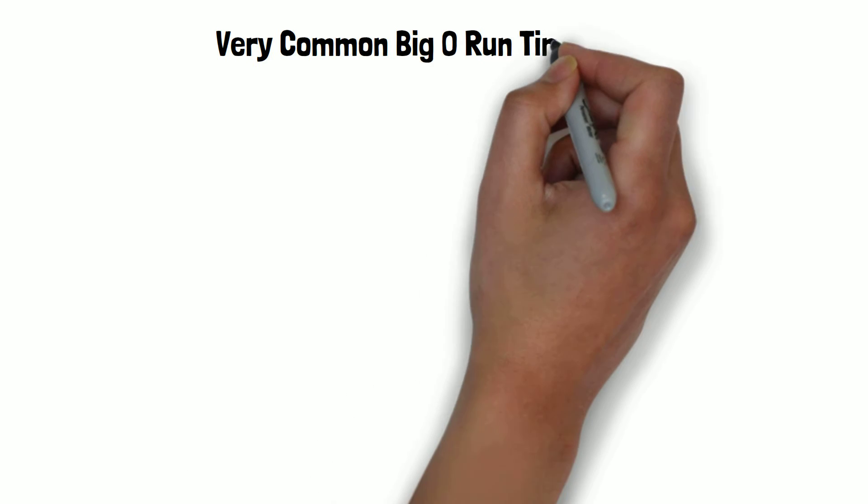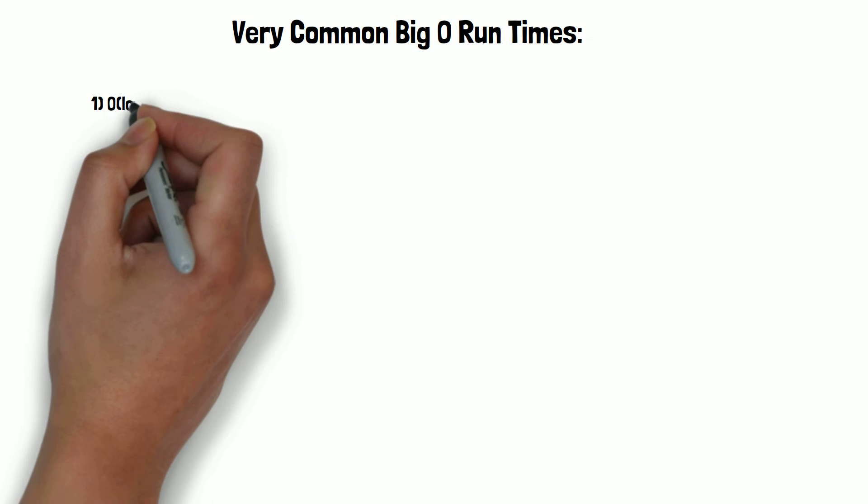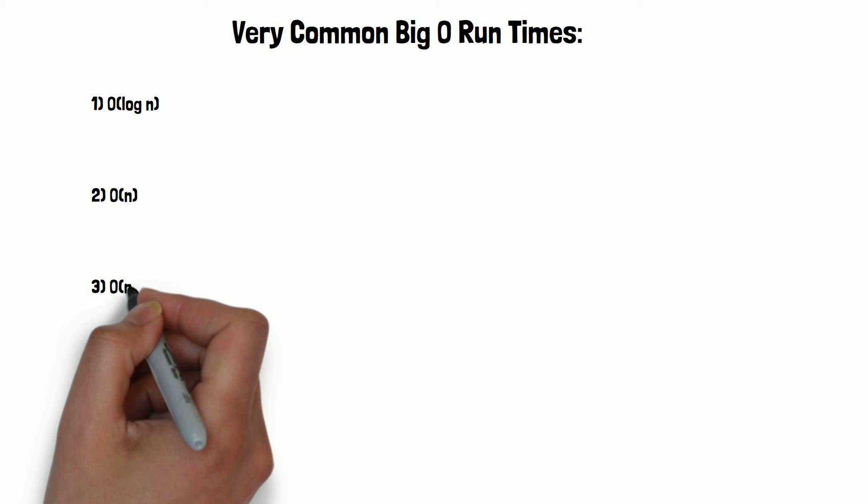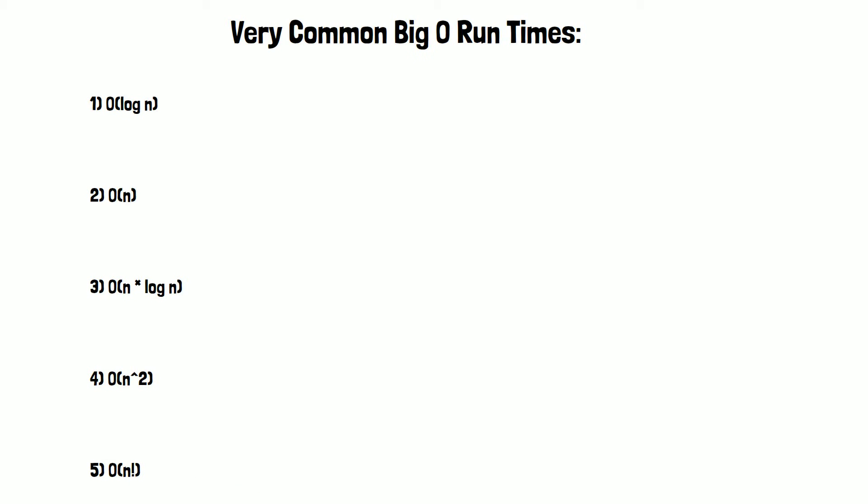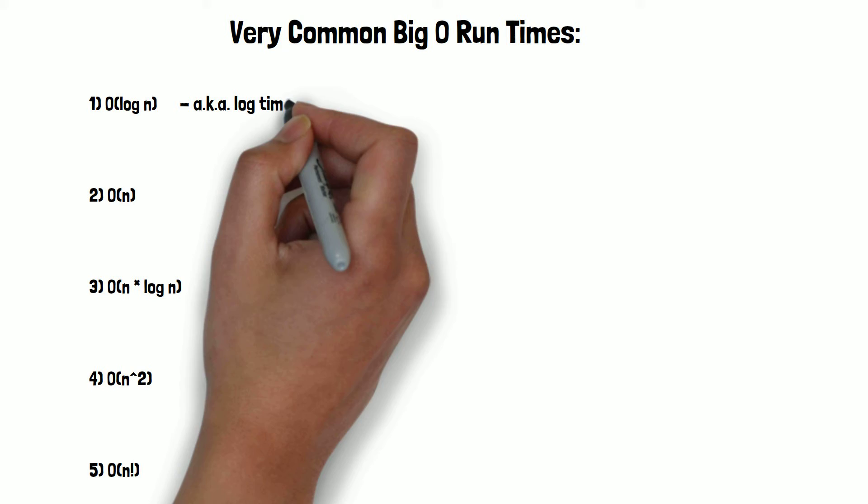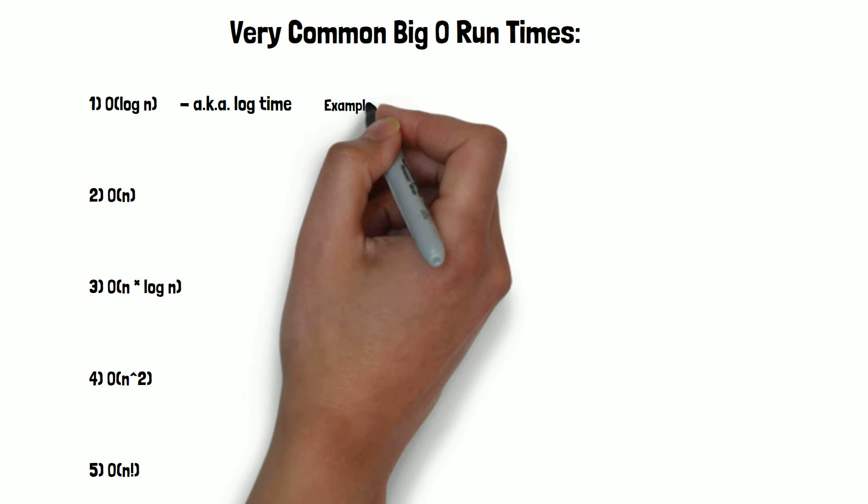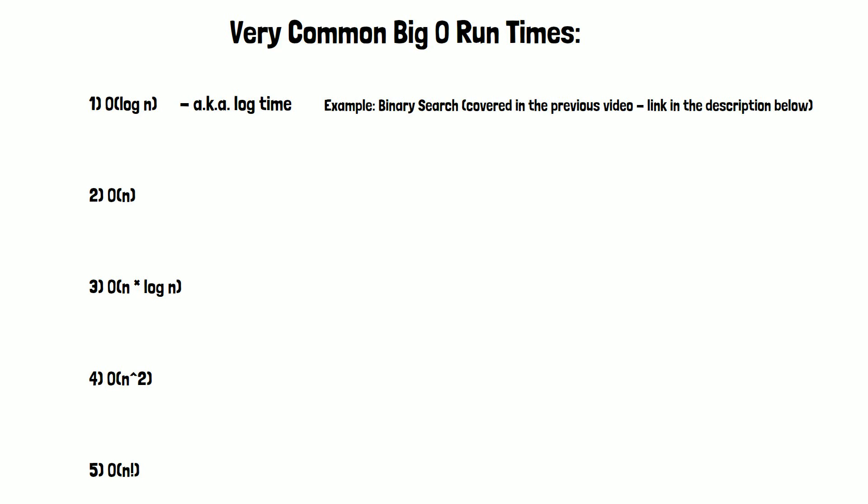Now, let's go over some Big O runtimes that are very common. Here are five Big O runtimes that you will encounter a lot, sorted from fastest to slowest. First is O(log n), also known as log time. A good example is binary search, which we discussed in the previous video.